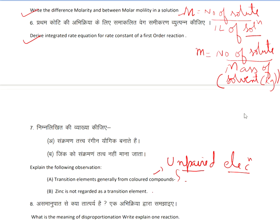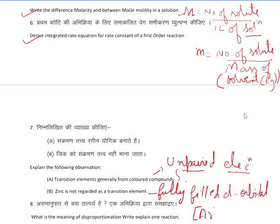Second question: why is zinc not regarded as a transition element? The condition for a transition element is that it should have a partially filled d-orbital. But zinc has a fully filled d-orbital in both ground state and excited state. The electronic configuration of zinc is [Ar] 3d¹⁰ 4s². Since it is fully filled, it is not regarded as a transition element.